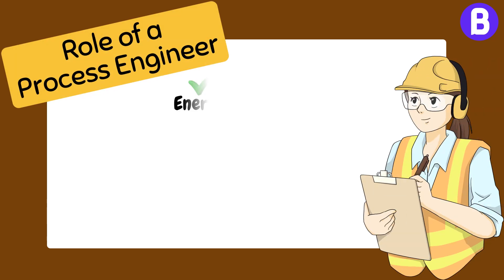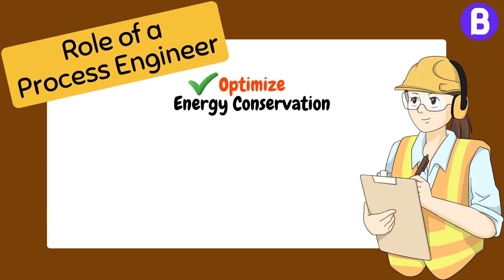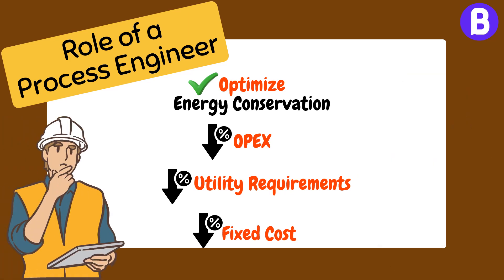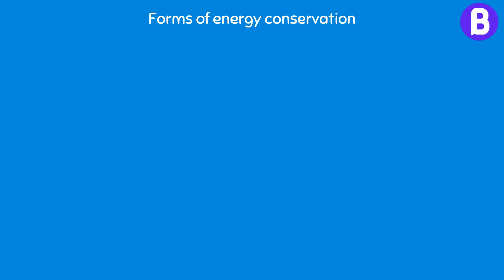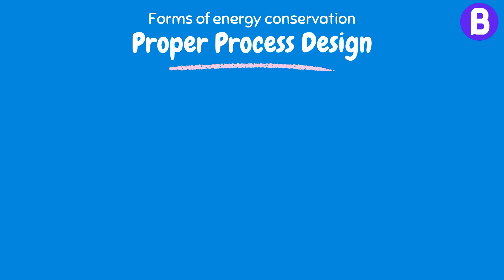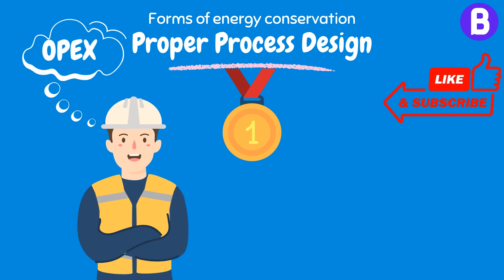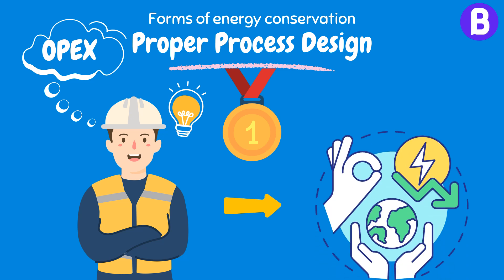That's why a process engineer must optimize energy conservation in any plant, as this shall significantly reduce the plant operating cost and yield utility systems with lower capacities, which is also considered a reduction in fixed cost. So how can a process engineer apply energy conservation practices in process design? The first way is proper process design, which is the shortest and most straightforward way to consider energy conservation. When a process engineer puts operating cost in mind, he could easily save a lot of effort in energy conservation.